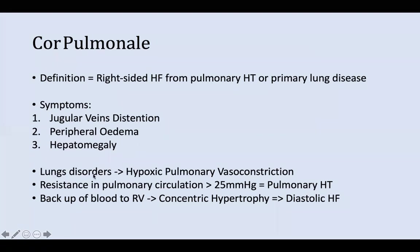Any lung disorder such as COPD, blood clots in the lungs, or respiratory distress syndrome can cause hypoxic pulmonary vasoconstriction. This backup of blood leads to resistance in the pulmonary circulation of over 25 mmHg, causing pulmonary hypertension. This in turn backs up blood into the right ventricle, causing concentric hypertrophy — increased wall thickness — which leads to diastolic heart failure.